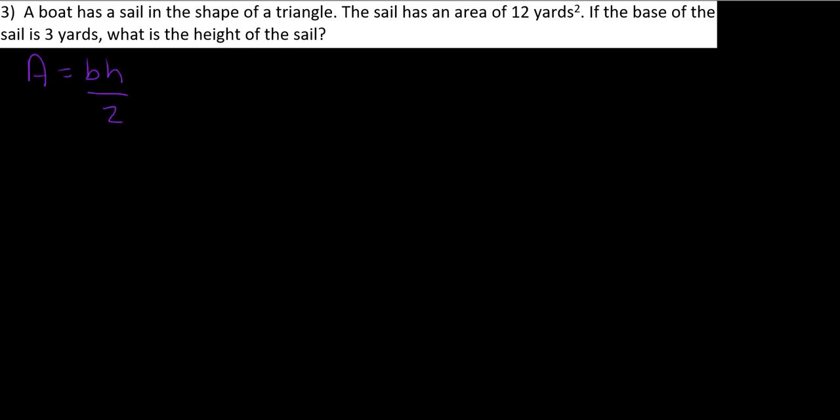So a boat has a sail in the shape of a triangle, so it could look something like this. The sail has an area of 12 yards squared, so total area is going to be equal to 12 yards squared.